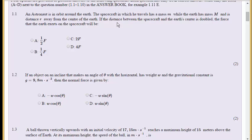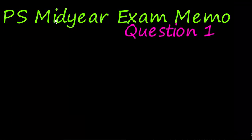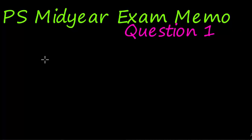An astronaut is in orbit around the earth. The spacecraft has a mass of n, the earth has a mass of M, and he's a distance r away from the center of the earth. If the distance between the spacecraft and the earth's center is doubled, the force that the earth exerts on the spacecraft will be... The distance used to be r, now it is 2r. You need to know the formula: F = GM/r².